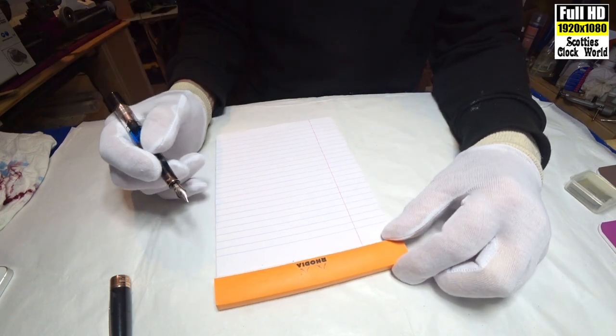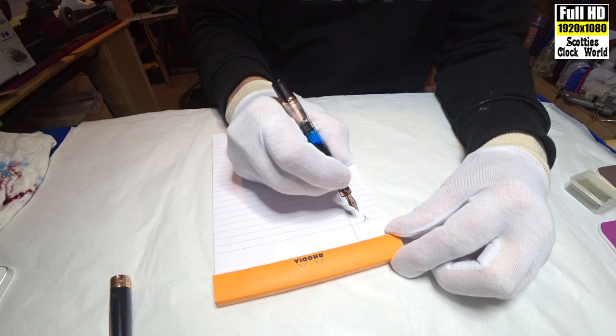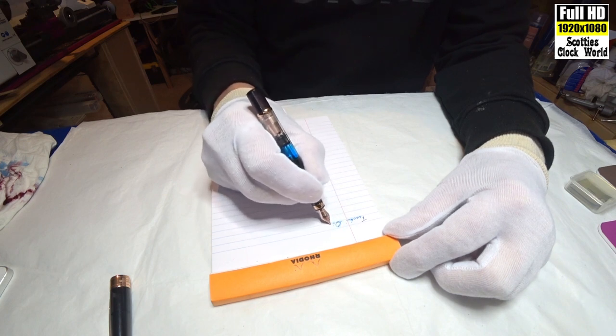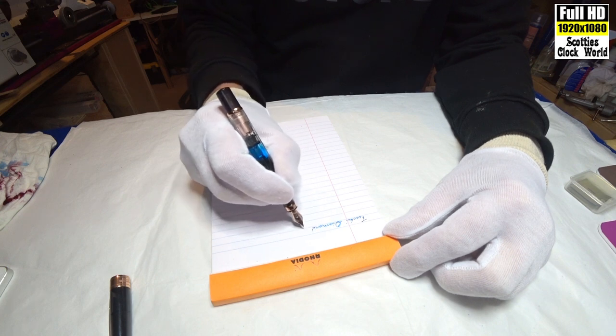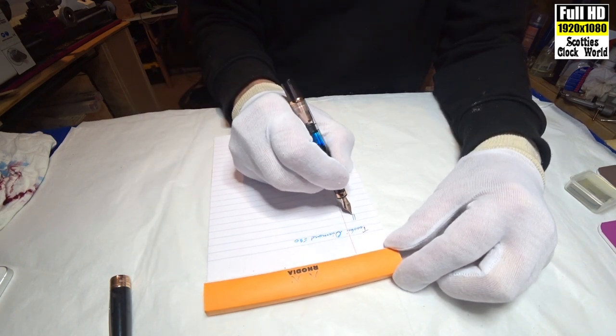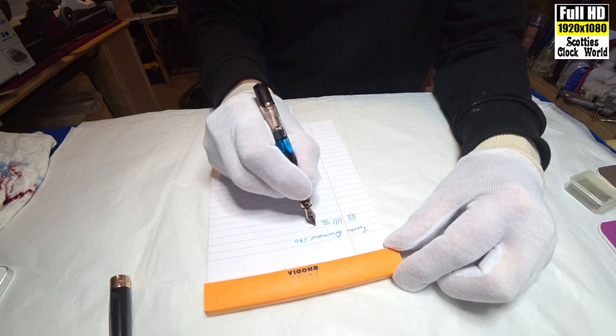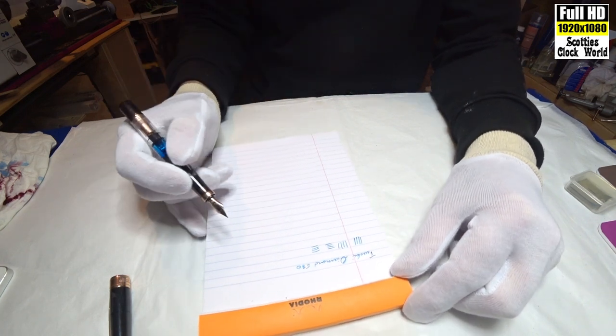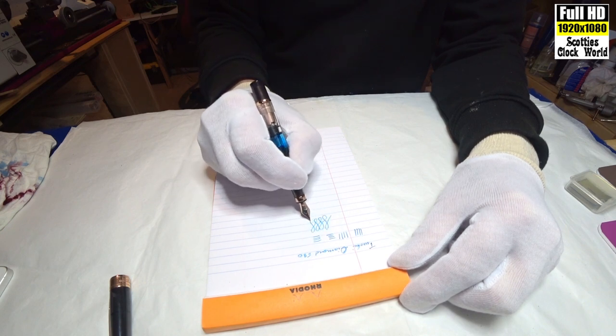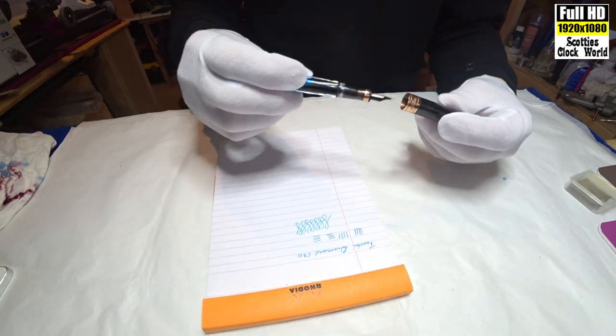We'll do some test writing to see exactly how the nib is affected. That scratches. That scratches. That doesn't. It's definitely the upstroke that is scratching. Oh, you can feel that biting on the way up. Alright, we'll do something about that.